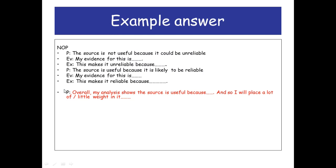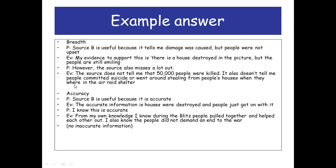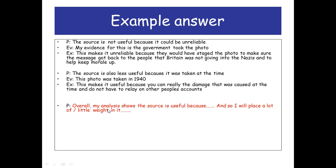That's source D done. Then you do exactly that again for source E — breadth, accuracy, nature, origin and purpose, and a little sum-up for each source. Here's a more defined example answer of basically what we've just gone through. There's the breadth, there's the accuracy, there's your nature, origin and purpose, and a little conclusion.